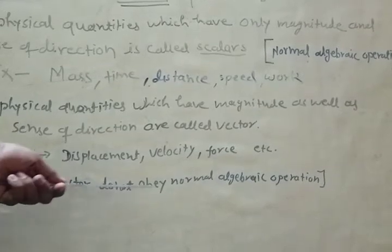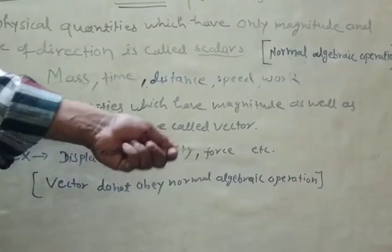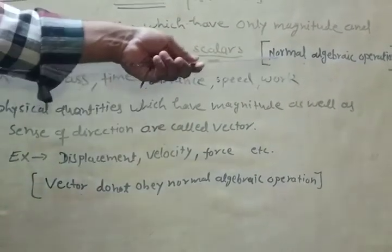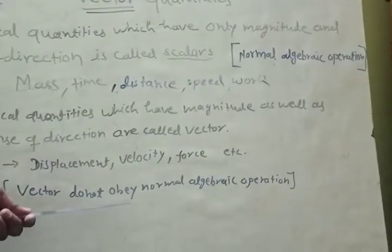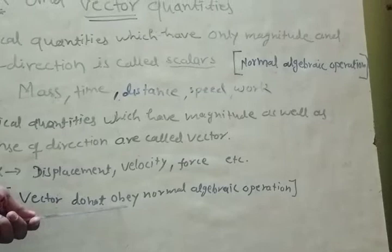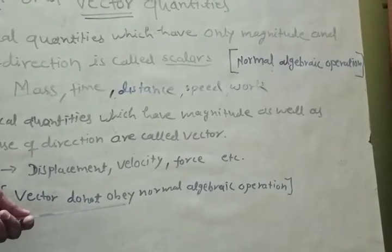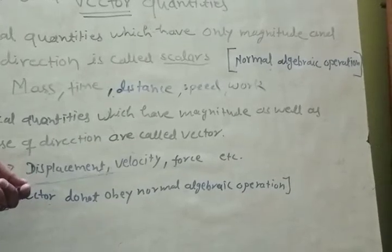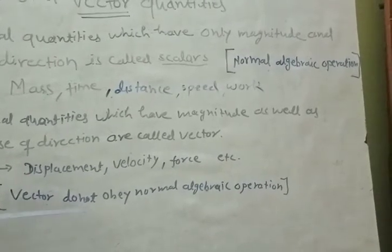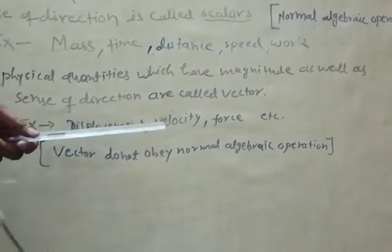With all these, sense of direction is connected. Magnitude is there, but when magnitude as well as sense of direction are both connected with any quantity, it is a vector. Vector does not obey normal algebraic operation. They are special rules that we will teach in the 11th class.